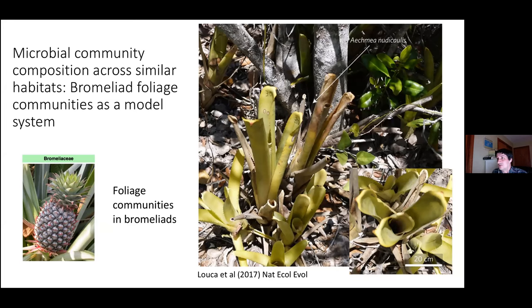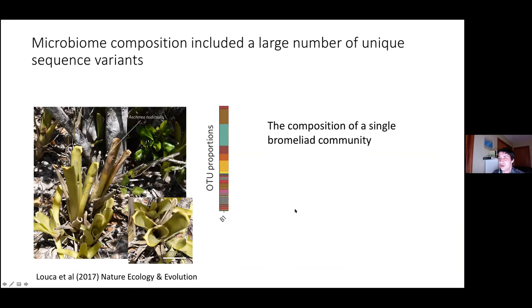The composition of those communities can be very important for the plant, as it helps them fix nitrogen. This is also a very interesting model system for understanding how reproducible community assembly is — one can go to the same geographical location and look at plants in close proximity, examining the communities assembled in them. These plants are from the same species, experiencing very similar temperature and humidity, and should be colonized by similar bacteria from their environment.